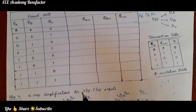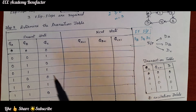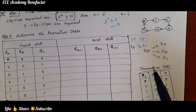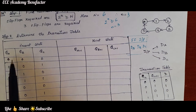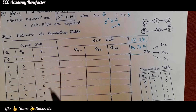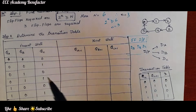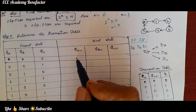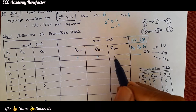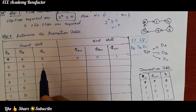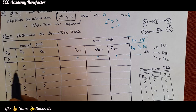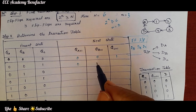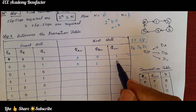Now we have to fill the next state by looking at the state diagram. State 000 represents state 0. After 0, the next state is 1, which in binary is 001. After 1, the next state is 2, written as 010. After 2, the next state is 3.